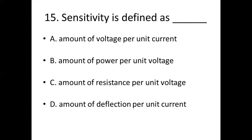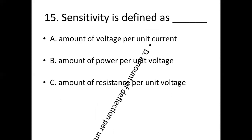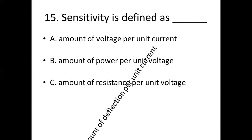Fifteenth bit. Sensitivity is defined as dash. Option A: amount of voltage per unit current. Option B: amount of power per unit voltage. Option C: amount of resistance per unit voltage. Option D: amount of deflection per unit current. Answer: Option D, amount of deflection per unit current.